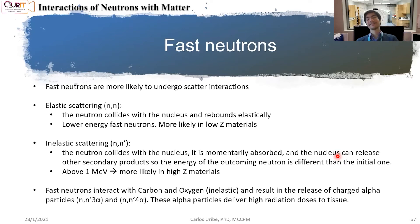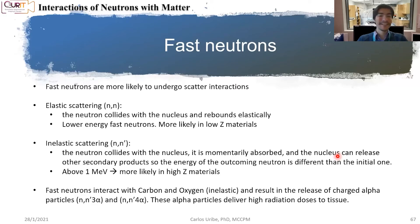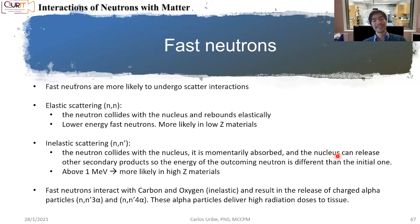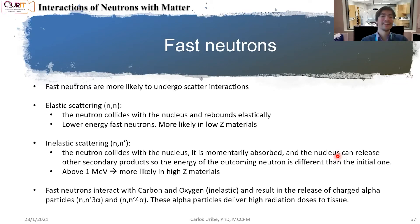You can also have fast neutrons, and these are neutrons that have much higher kinetic energies. When you have this type of neutron, they're more likely to undergo scattering interactions, so they won't really just go inside the nucleus — they'll knock the nucleus and change direction.